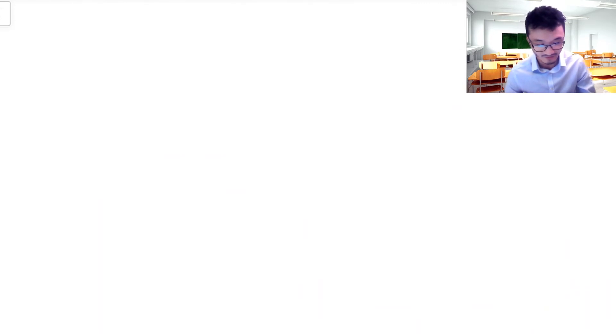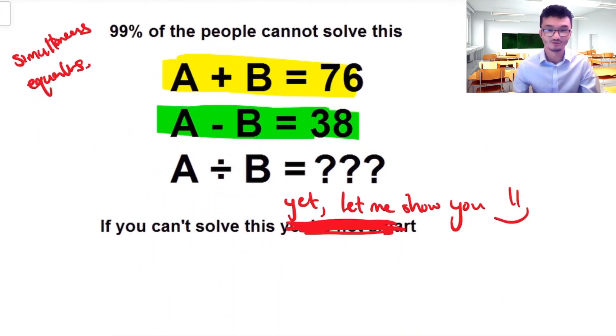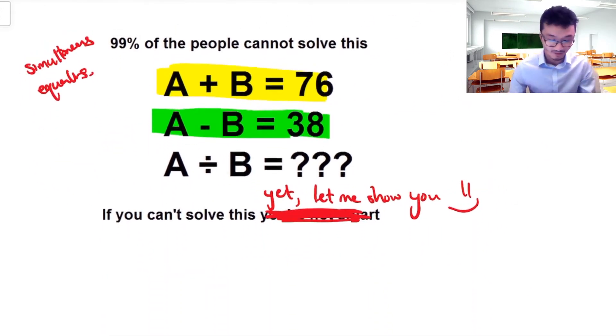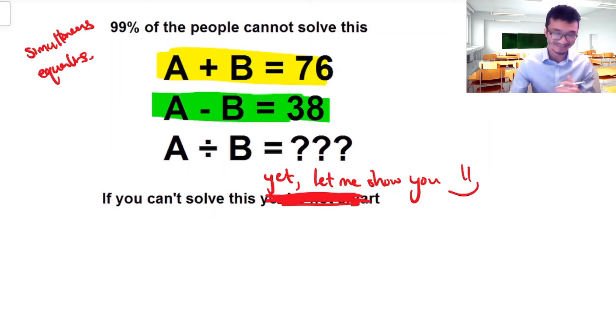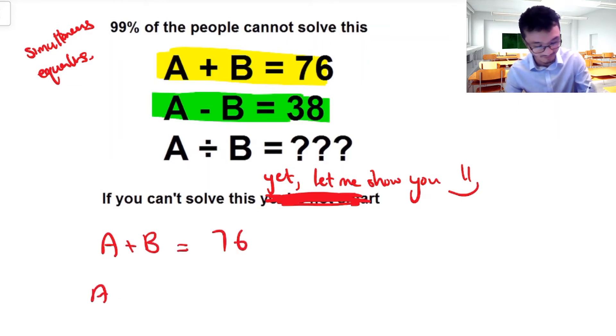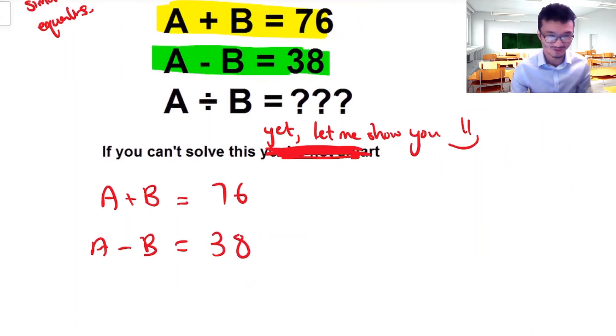Now, how would you work that out through algebra? Well, the trick that we use is the fact that these equations here, they're actually able to interact with each other. And what I mean by that is when you arrange them like this, these two equations, they can interact with each other like so.